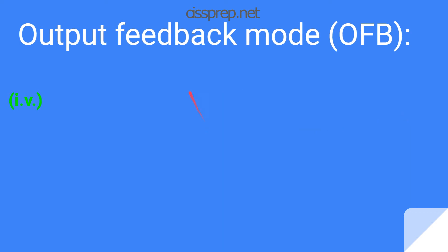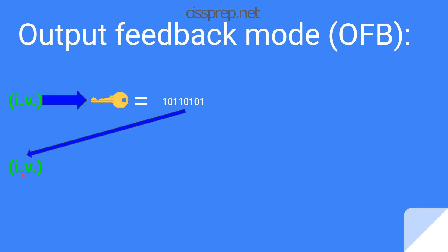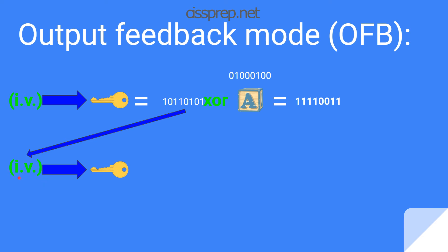With output feedback mode, the algorithm generates an initialization vector and encrypts it using a key to produce ciphertext. That ciphertext instantly becomes your new initialization vector for the next block. You XOR that encrypted initialization vector against the first block of data to get your ciphertext. For the second block, you take that same encrypted initialization vector as your new IV, encrypt it again through the same method, and XOR the resulting ciphertext against your next block of data to yield new output ciphertext.